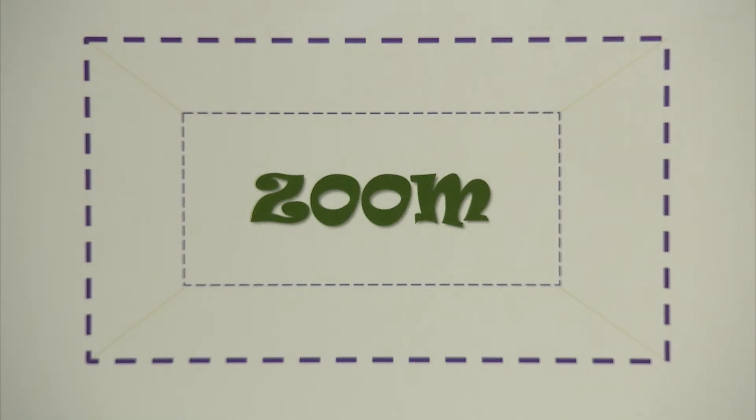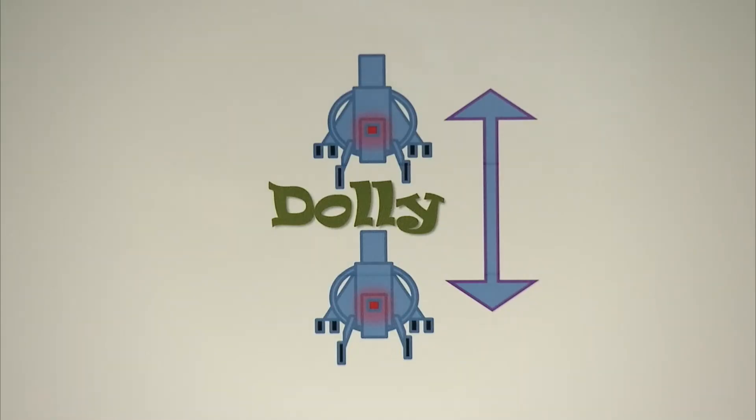The fourth term is dolly. When the camera is dolly, the camera and the tripod are rolled in towards the subject. As opposed to zooming, the perspective does change when you dolly, or you may dolly out from the subject.